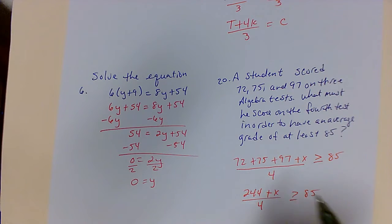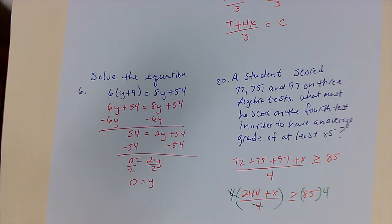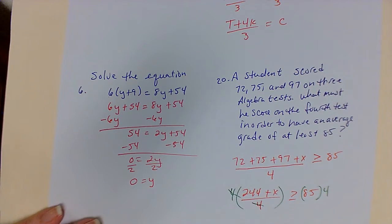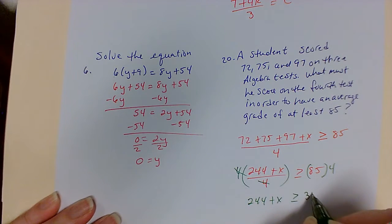Now I want to clear out the 4 in my denominator because it'll make it easier to solve. That gives me 244 plus x is greater than or equal to 340.